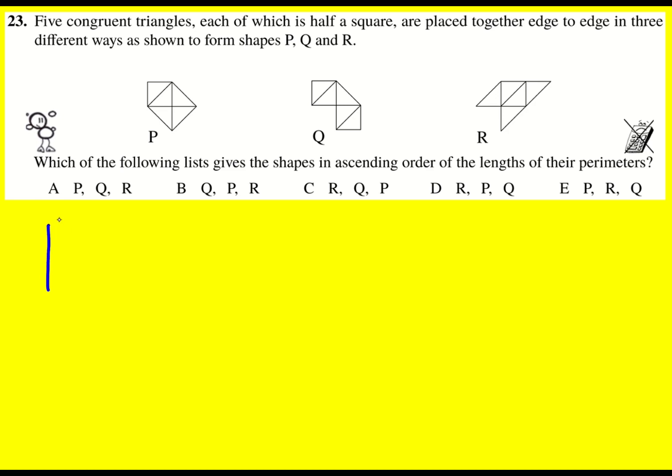We're told that we have five congruent triangles connected together for these different shapes. Each of which is half a square, so that's going to mean they're isosceles. We've got 90 degrees here, we've got 45 and 45. But I can add some lengths on now. I don't know what the lengths are, but I can just make them all one.